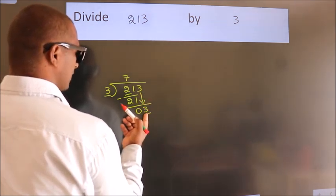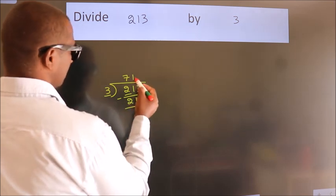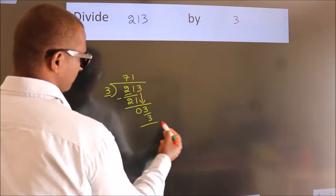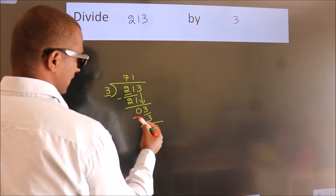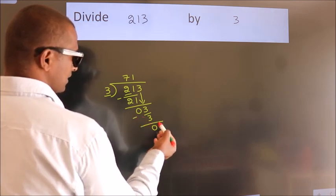When do we get 3? In the 3 table, 3 ones, 3. Now, we subtract. We get 0.